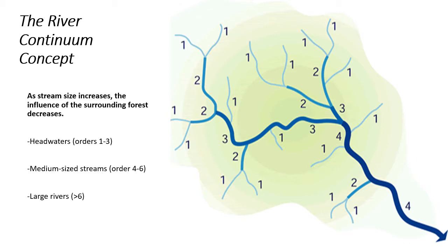In order to explain this better, I'm going to first discuss stream order, a basic concept in fluvial geomorphology that was used to assign different sections of a river in the river continuum concept. When you think about stream order, the number correlates directly to the size of the stream — the lower the number, the smaller the stream.